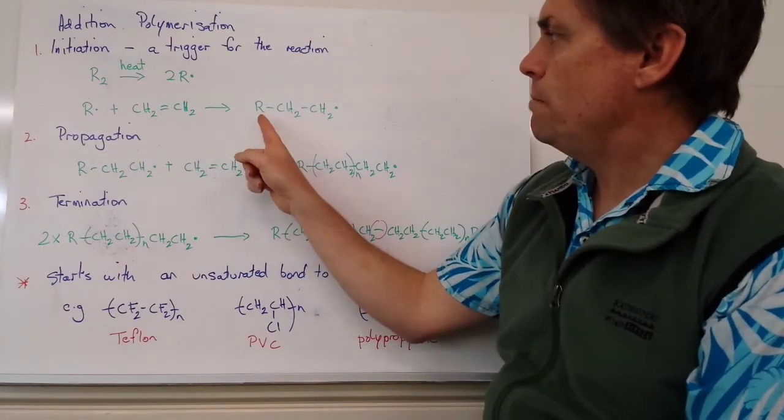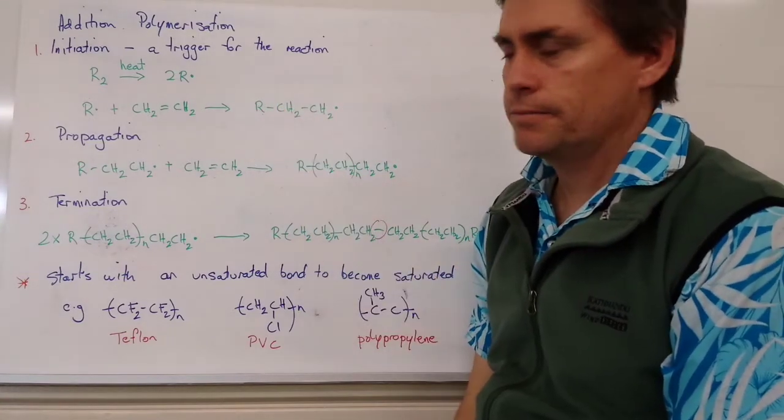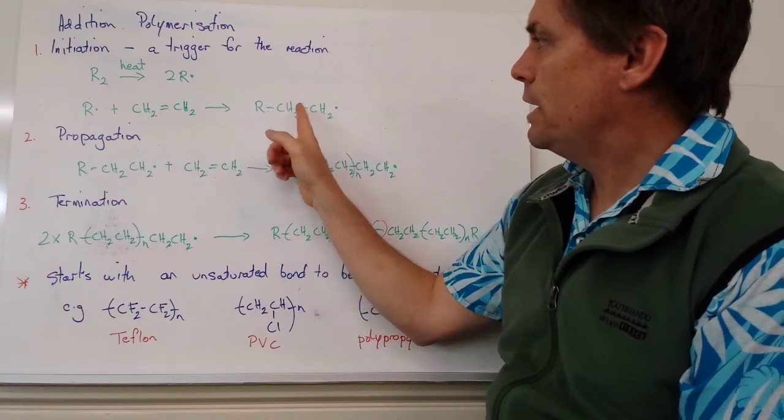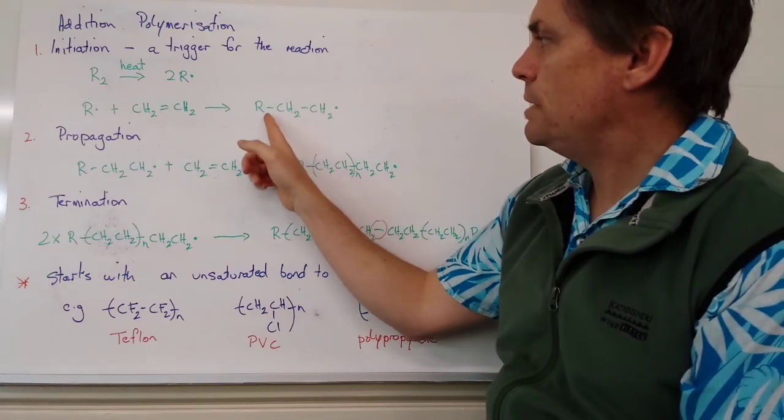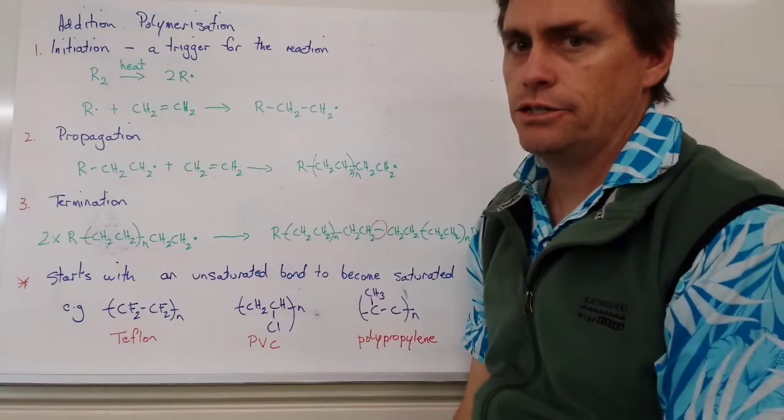So we form our radical monomer complex. And what we find is the free electron is transferred from the R, from our radical, through to the other end to our CH2 group.